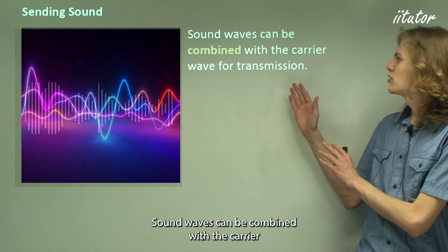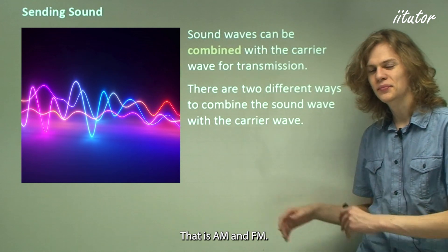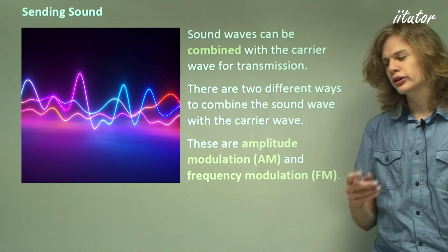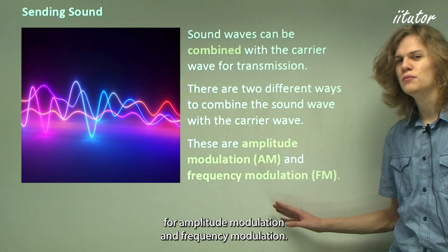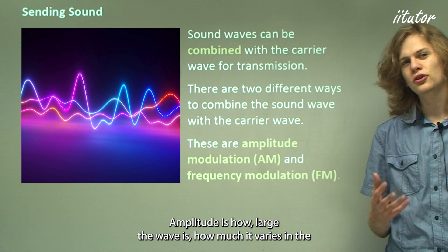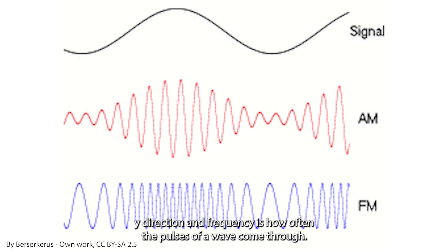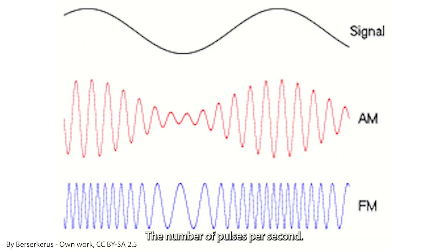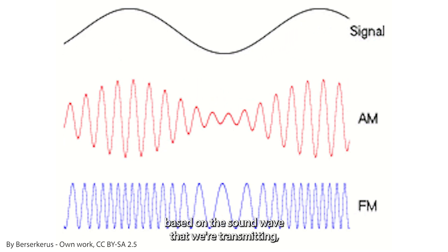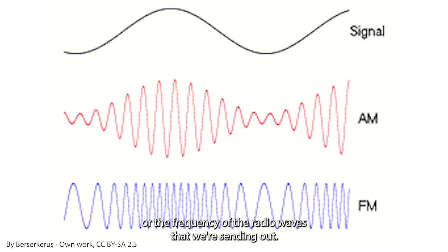Sound waves can be combined with the carrier wave for transmission in two different ways: AM and FM, short for amplitude modulation and frequency modulation. Amplitude is how large the wave is — how much it varies in the y-direction — and frequency is the number of pulses per second. By causing these properties to change slightly based on the sound wave being transmitted, we can encode the sound wave in either the amplitude or the frequency of the radio wave.